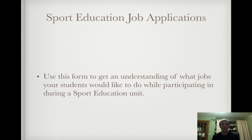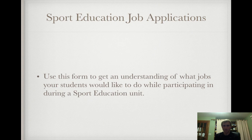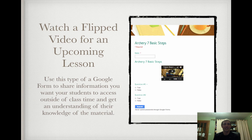Sport education job applications — use this form to get an understanding of what jobs your students would like to do during a sport education unit. Students choose from six different titles and fill out a job application explaining why they'd be the best person for the job. I could have done this with pencil and paper, but I sorted it by hour and by the positions students were interested in. I was through looking at the sheet for my eight classes within about 25 minutes — it would have taken a couple of hours with paper.